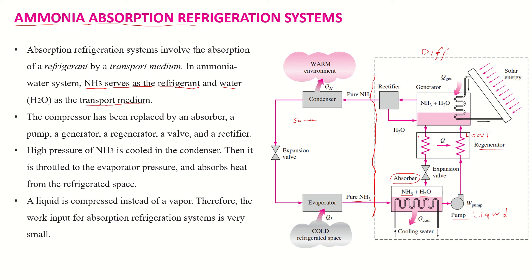On the other side of the regenerator, there is a high-temperature stream. Heat is transferred from the higher temperature side to the lower temperature side. The rich ammonia-water mixture absorbs heat from the high-temperature stream, which is low in ammonia concentration.